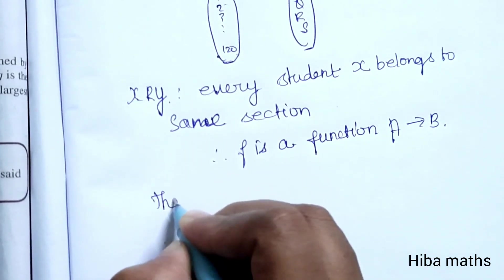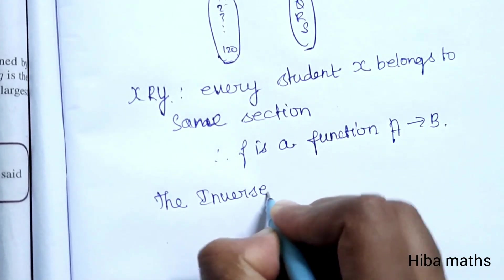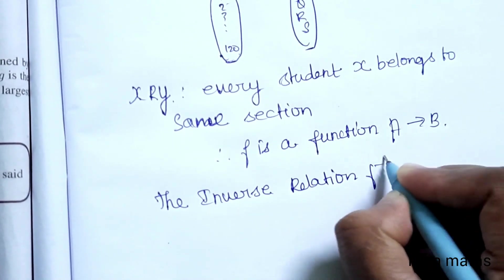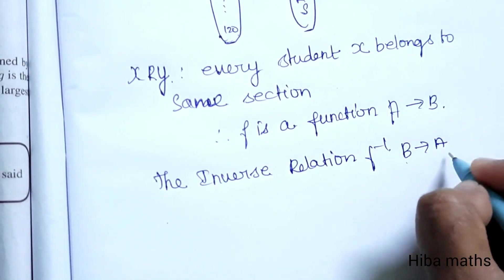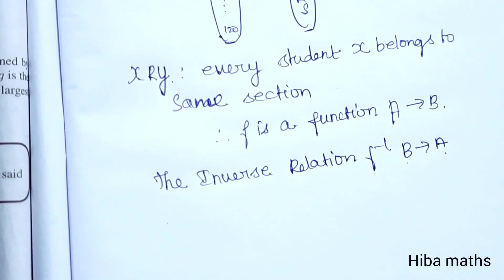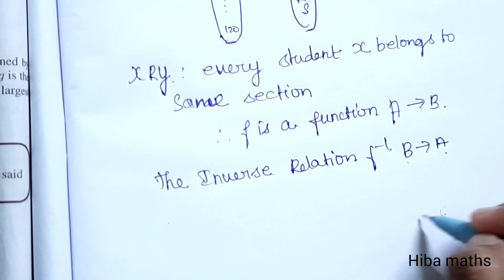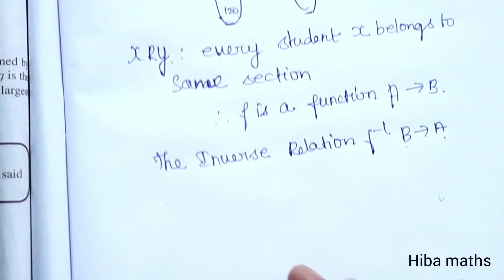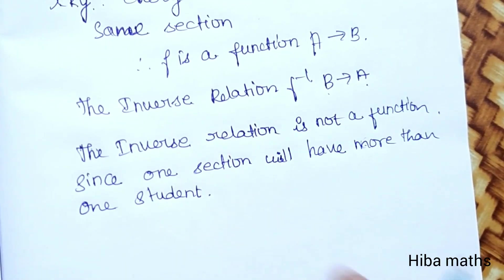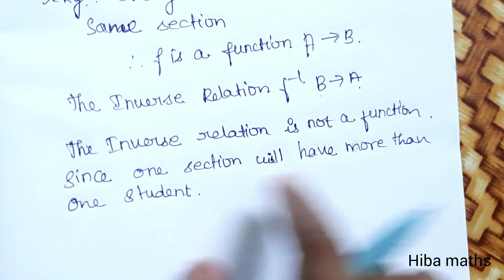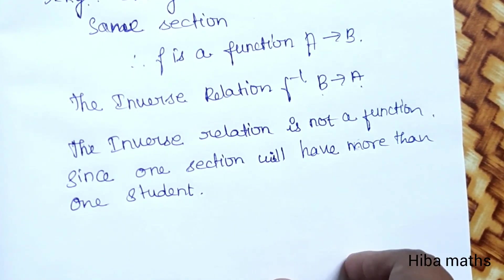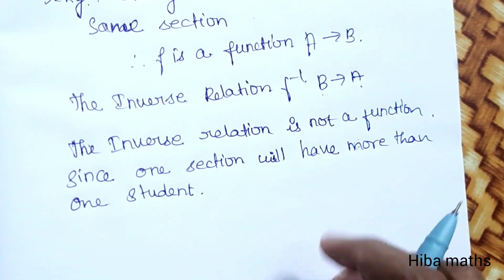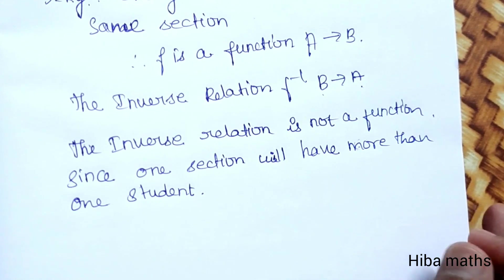Next, the inverse relation. F inverse maps B to A. The inverse relation is not a function, since one section will have more than one student. Each student belongs to one section, but one section maps to many students, so the inverse function is not a function.